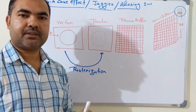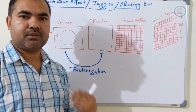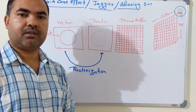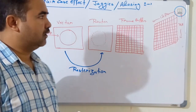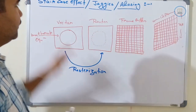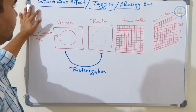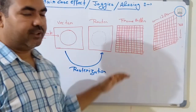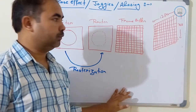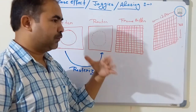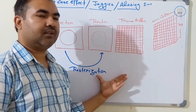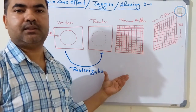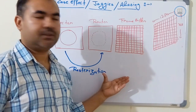In this session we are going to discuss one of the most important issues in modern computer graphics. This issue is called the staircase effect, jaggies effect, or aliasing effect. Before starting, we should go to the background of computer graphics to understand why this issue is generated.